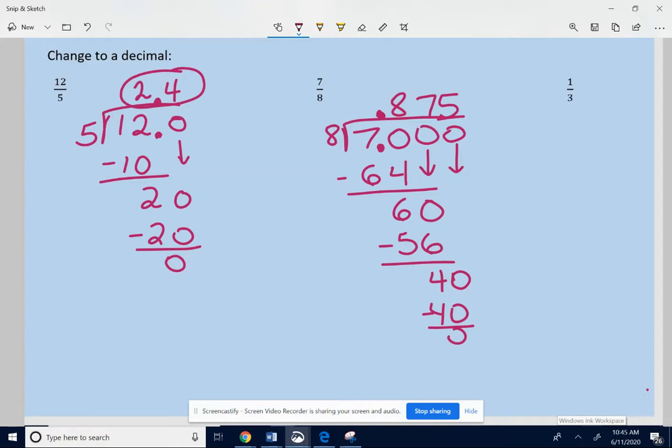It's okay to leave the 0 out in front of the decimal or to put a 0 in front of the decimal point. So 0.875. 1 third. Divide 3 into 1.